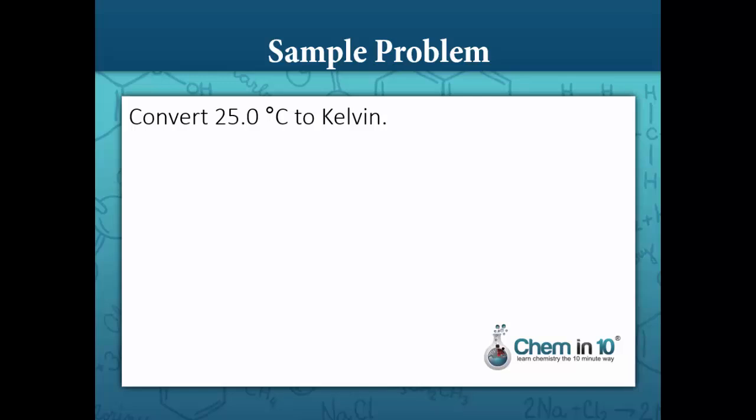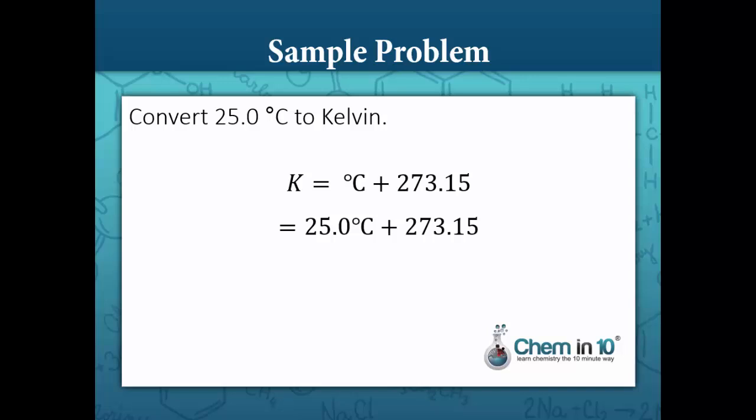Our last sample problem: convert 25 degrees Celsius to Kelvin. Kelvin equals degrees Celsius plus 273.15. So Kelvin equals 25 degrees Celsius plus 273.15, which is 298.15 Kelvin.